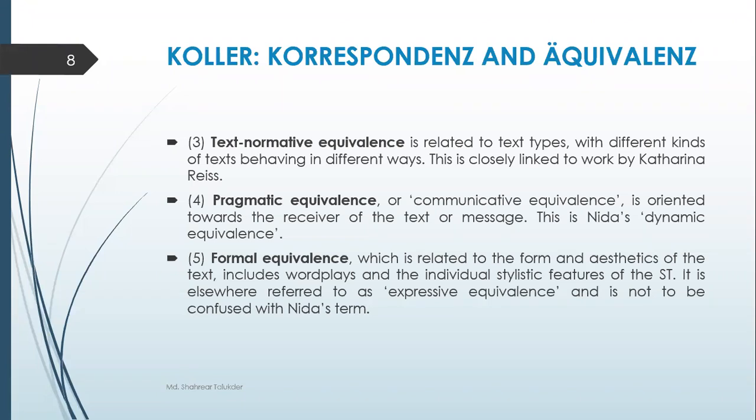Pragmatic equivalence is very practical and based on utility. If you consider the stakeholders, the original author of the source text is one stakeholder, then the translator, and then the readers. We have three different stakeholders in this whole process. The readers are at the end — they are the end receivers — so we consider their case first and translate accordingly. That is pragmatic equivalence.